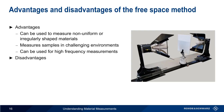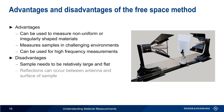One of the disadvantages of the free space method is that the sample needs to be relatively large and flat in order to be properly illuminated by the antennas. Using free space techniques also means we have to be concerned about reflections between the antenna and the surface of the sample, and diffraction along the edges of the sample.